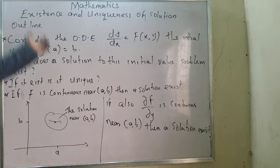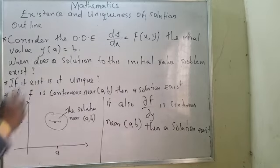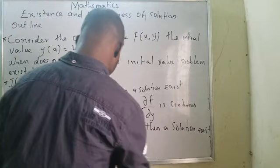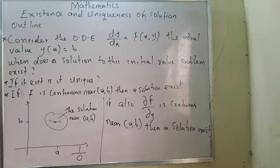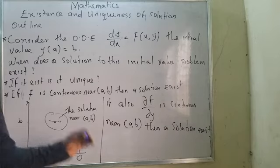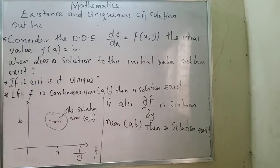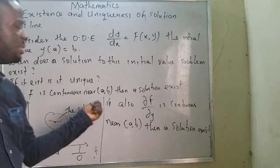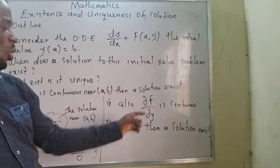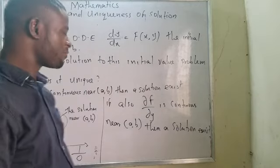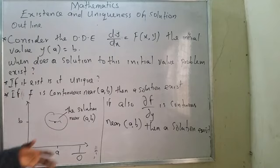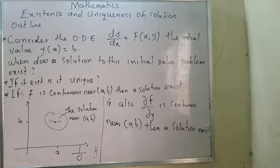So there are two things to check. Step one: substitute the initial value into f(x, y) — if you get a real number (not undefined, not complex), it is continuous and the solution exists. An undefined value like 1/0 or √(negative) means it does not exist. Step two: find the partial derivative of f with respect to y. If that is also continuous near (a, b), then the solution is unique.